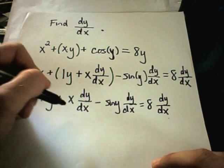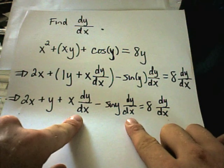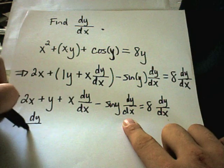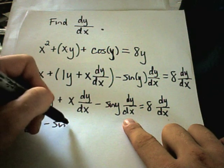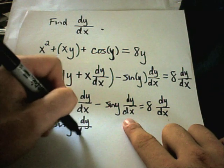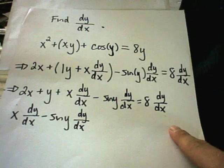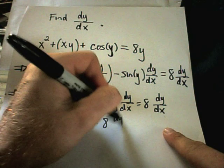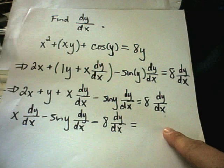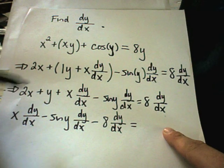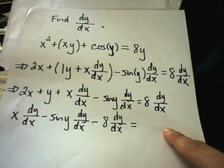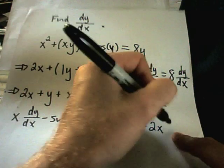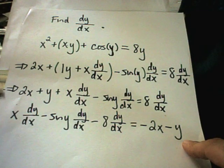I'm going to keep the terms that have a dy/dx on the left side. So I'll have x dy/dx minus sine y dy/dx. I'm going to move the 8 dy/dx over by subtracting it. So minus 8 dy/dx. And now, the two terms on the left, the 2x and the y that didn't have a dy/dx, I'm going to subtract those over. So minus 2x will bring the 2x over and minus y will bring the y over.